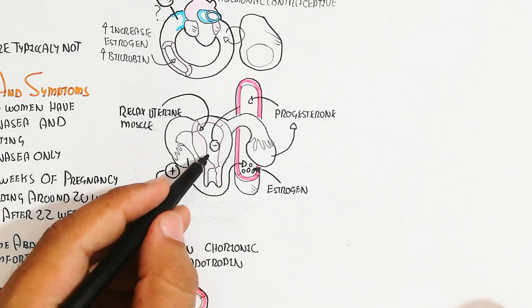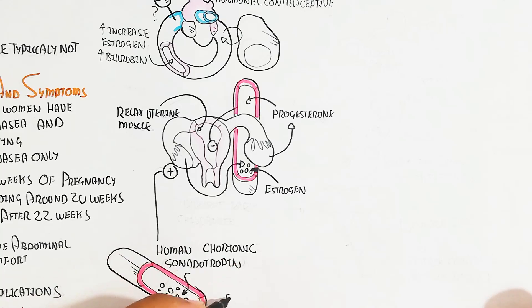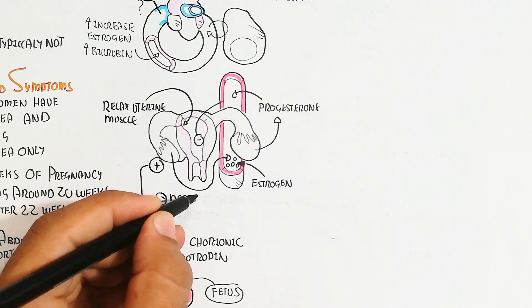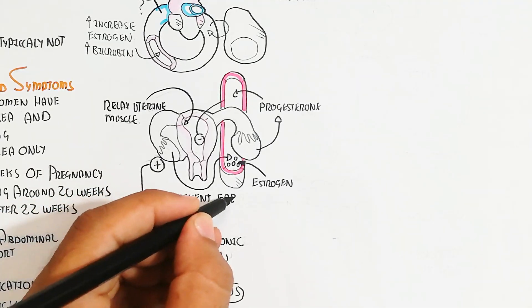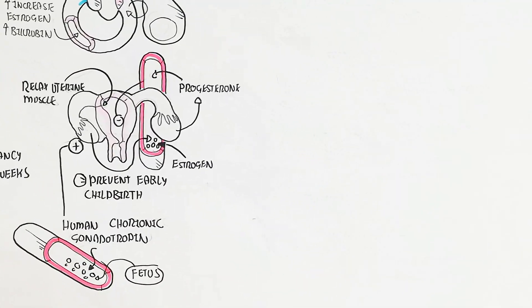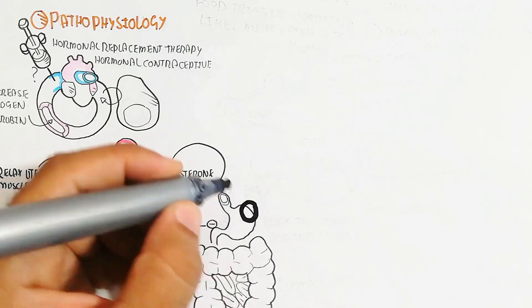Human chorionic gonadotropin triggers progesterone and estrogen production. Progesterone relaxes the wall of the uterus and targets to prevent early childbirth. This is very important: it relaxes the uterine muscle and also targets the gastrointestinal tract.